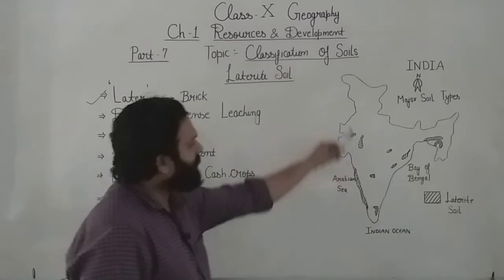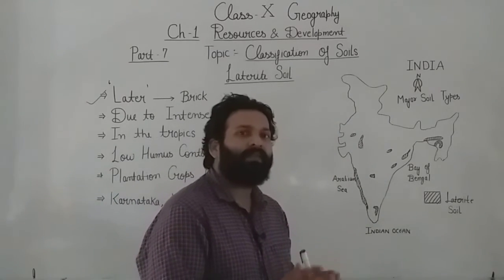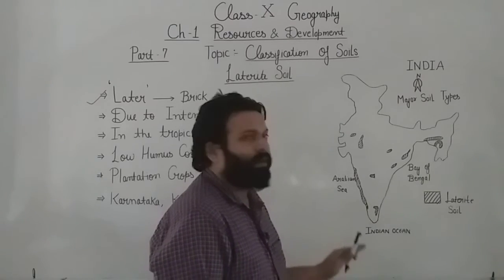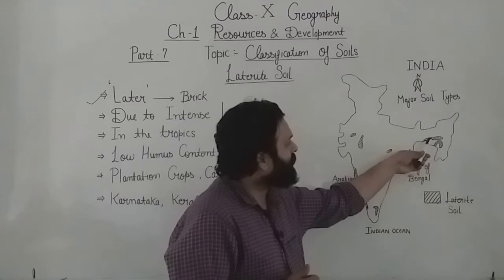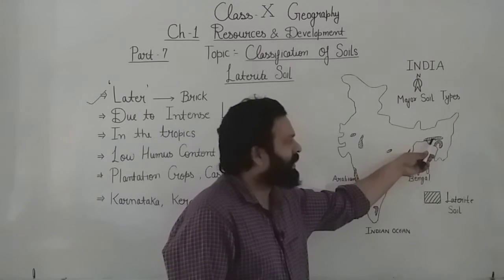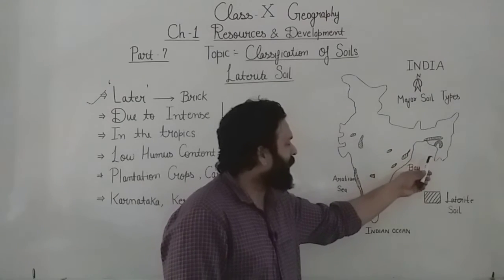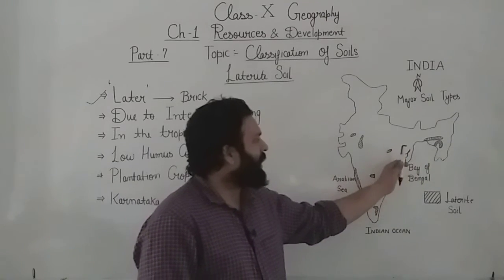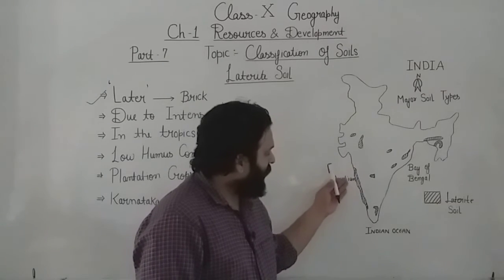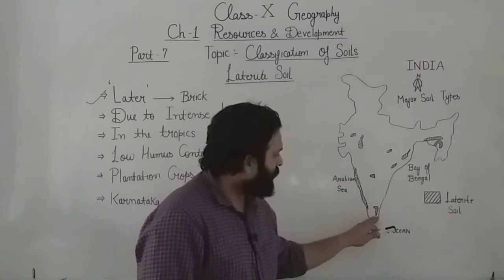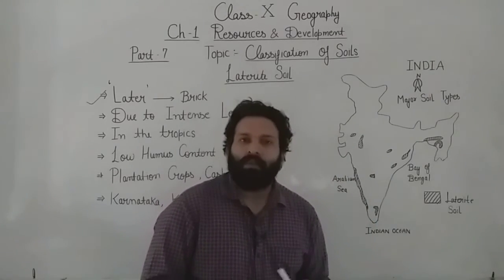Looking at the physical map of India, this soil is found in patches. It is found in the northeastern part of India — especially hilly areas of Assam, some parts of Meghalaya, hilly areas of Odisha, the Western Ghats covering Karnataka, Kerala, some parts of Tamil Nadu, and some parts of Madhya Pradesh.